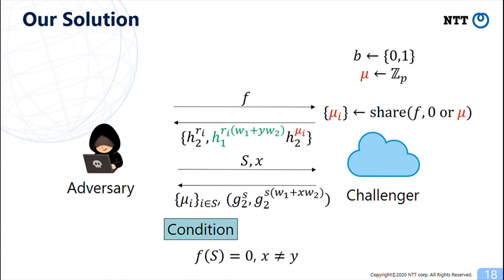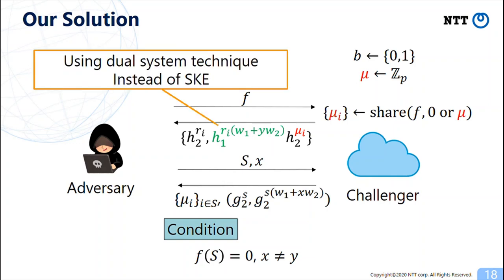Our observation here is that if the IBE part that hides the shares mu_i has adaptive security, then we can similarly prove the security of 1-ABE, similarly to the original one. So, we modified 1-ABE game so that we can use dual system technique to achieve adaptive security also in 1-ABE.